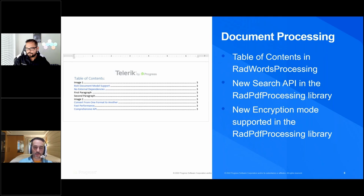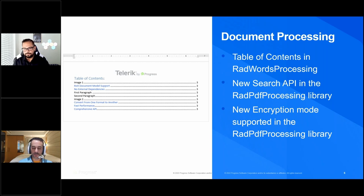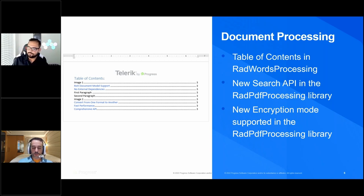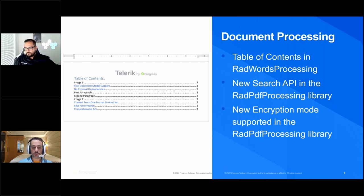Document processing libraries got some updates. There's a new table of contents in RadWords processing and a brand new search API — you can search through the DOM of your document and find text, getting back not only the text and where it's located but the page it's on. There are also new encryption modes supported within the RadPDF processing libraries — you can save documents encrypted with passwords and set roles.